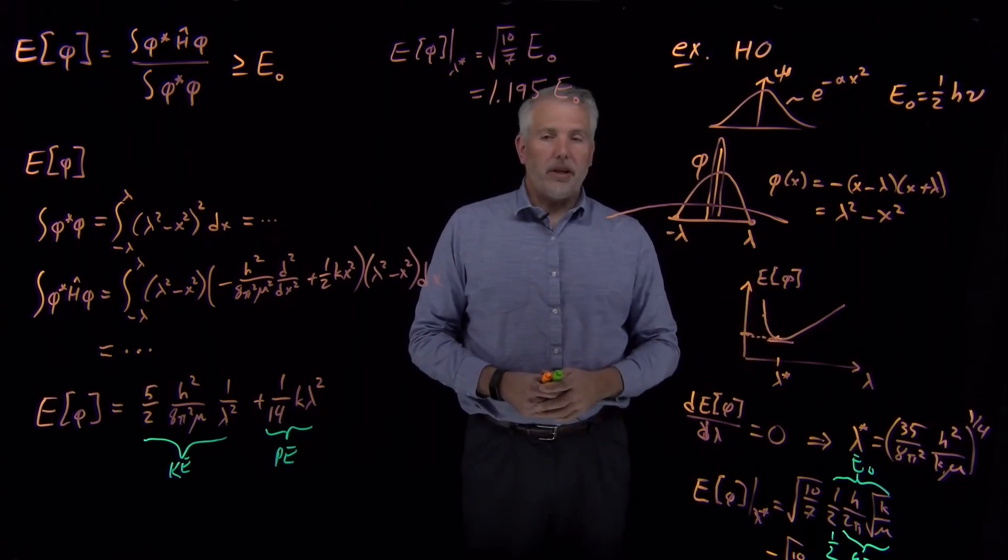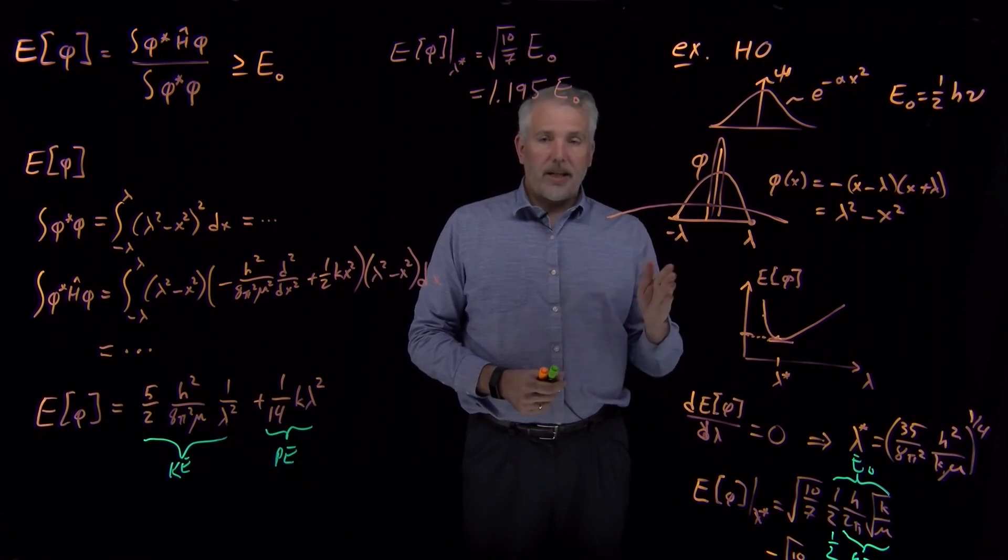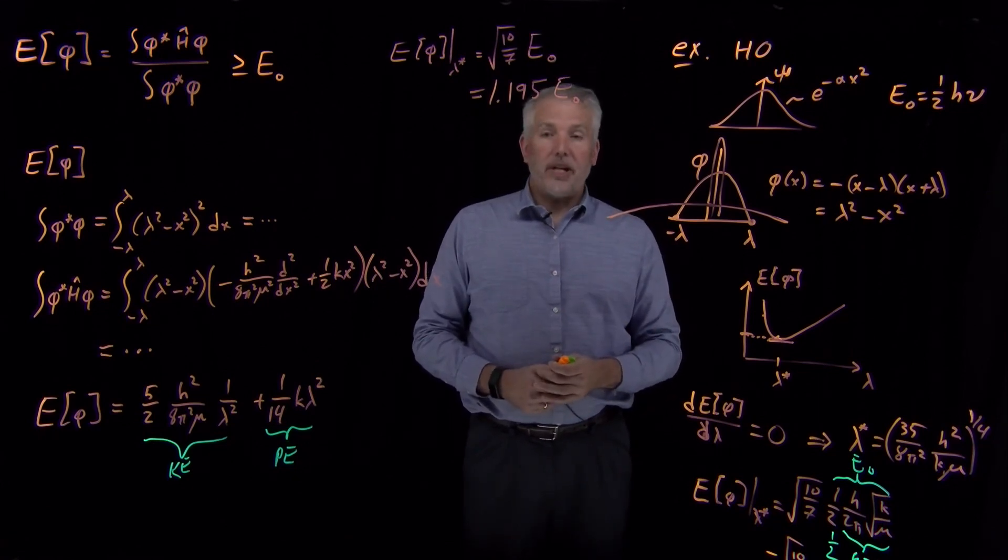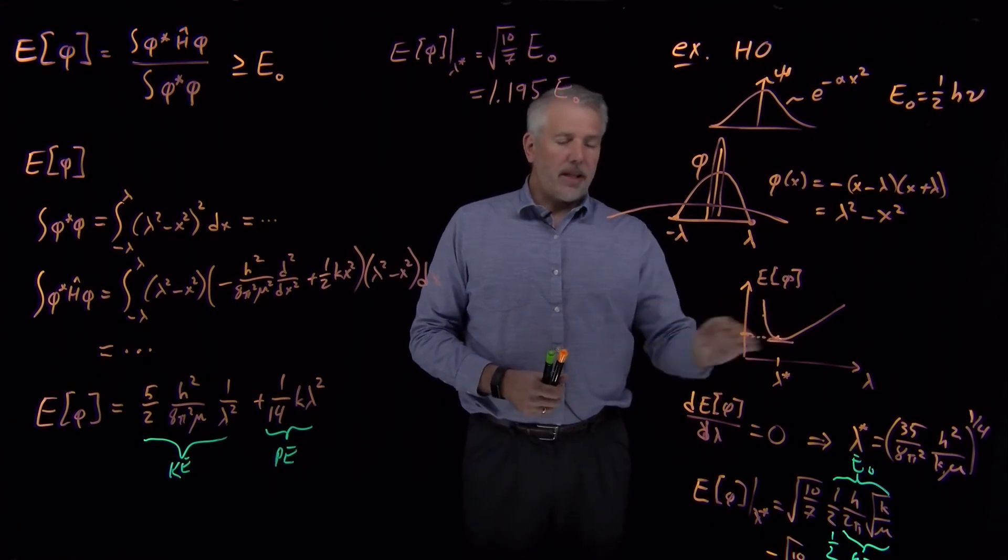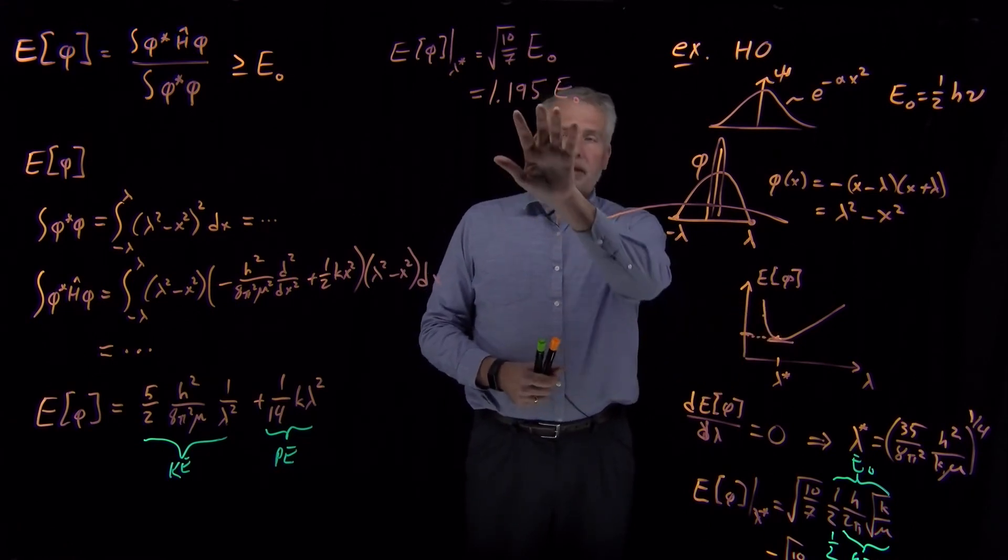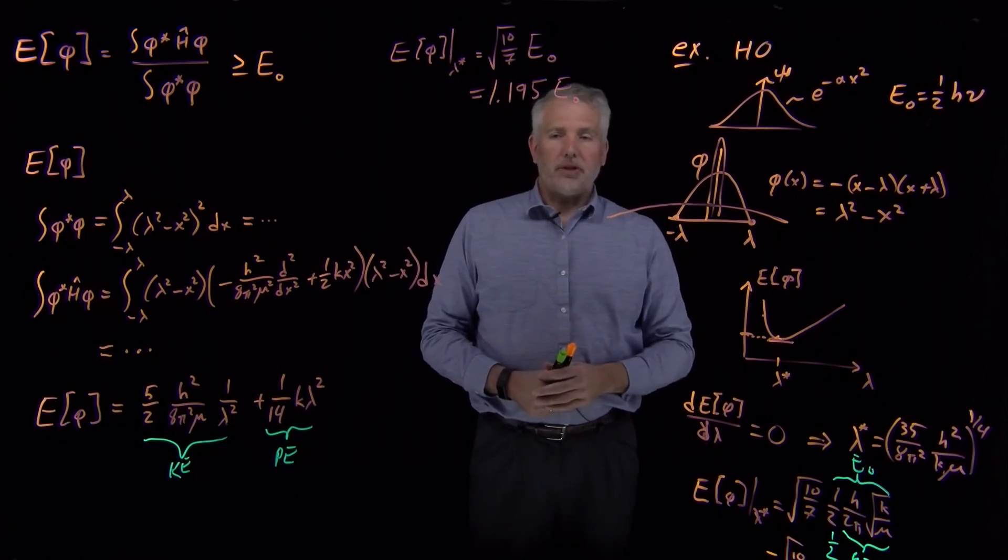We can then vary that variable. We can say what among all the different values of lambda gives me the lowest possible energy, and by varying that variable, then we use this variational approach to its full extent, and we can find out the best thing I can do with a parabola and the closest approach I can get to the true ground state energy.